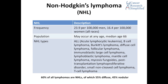Non-Hodgkin's lymphoma occurs in 23.9 per 100,000 men and 16.4 per 100,000 women, and this includes all races. It may occur at any age but usually the median age is 66. There are several types of non-Hodgkin's lymphomas.